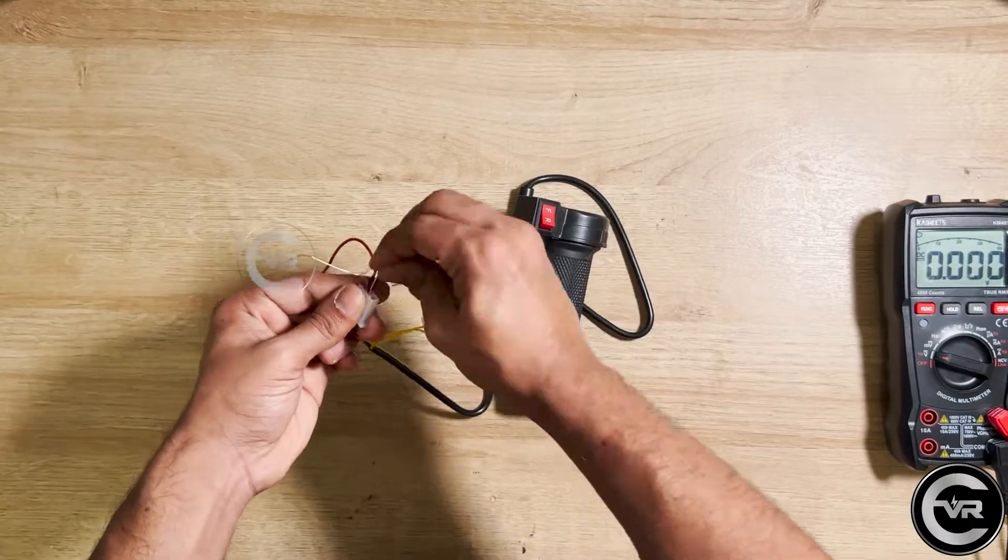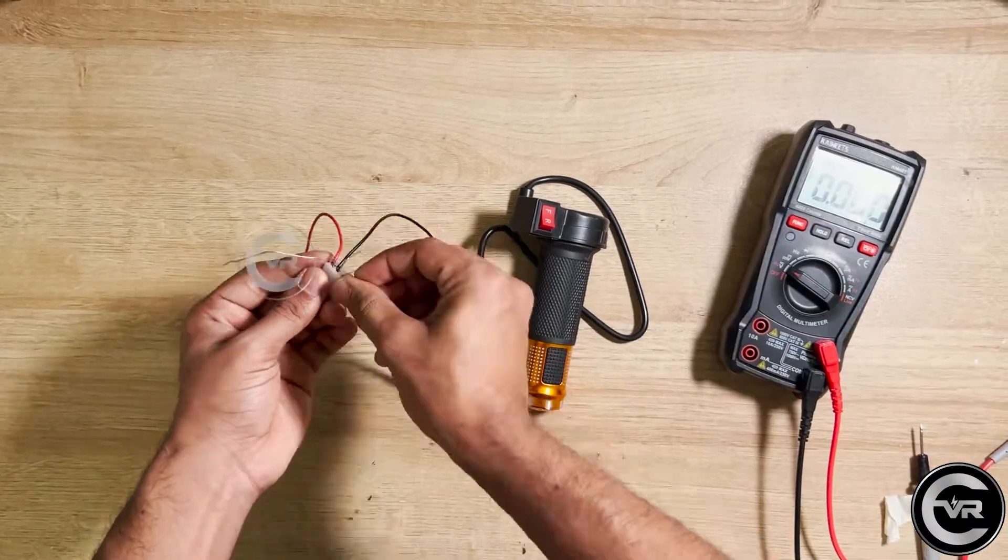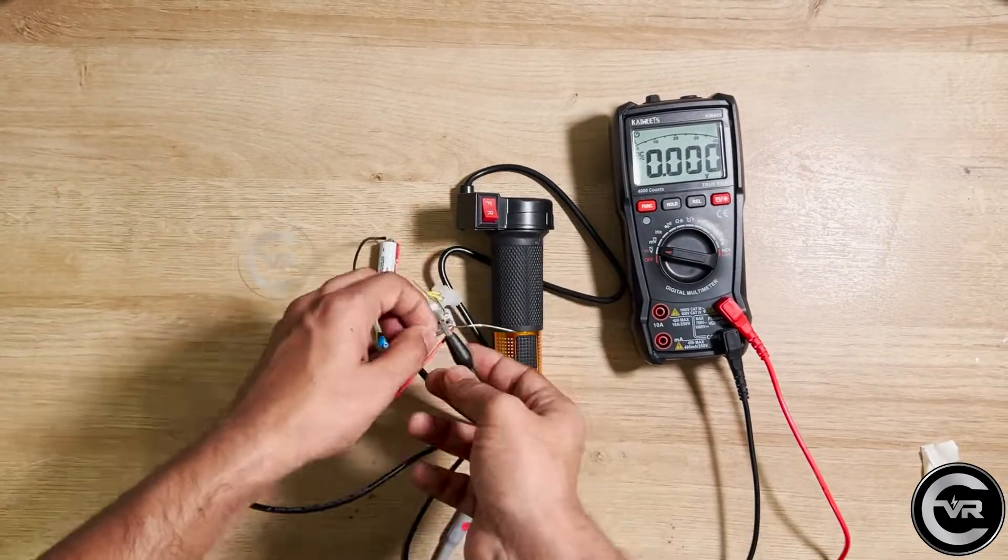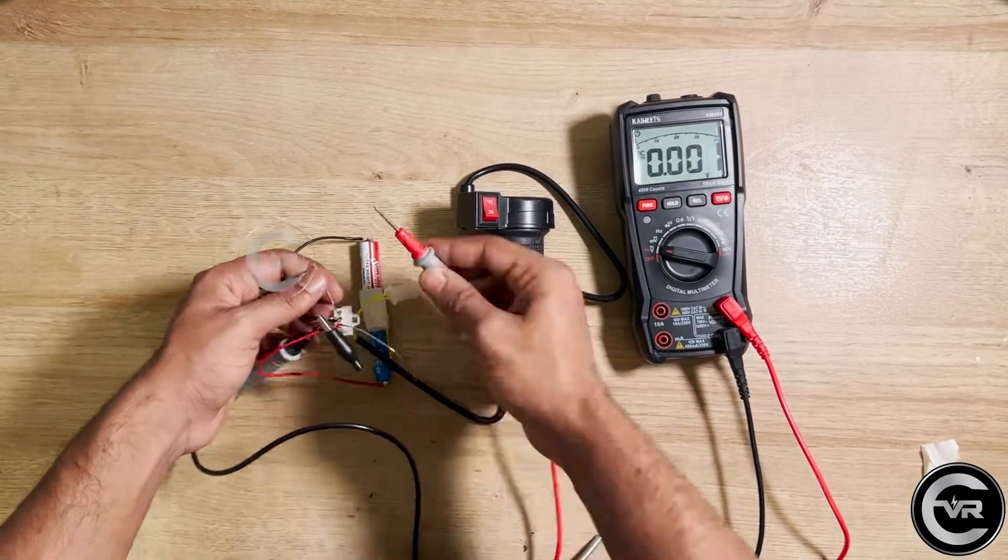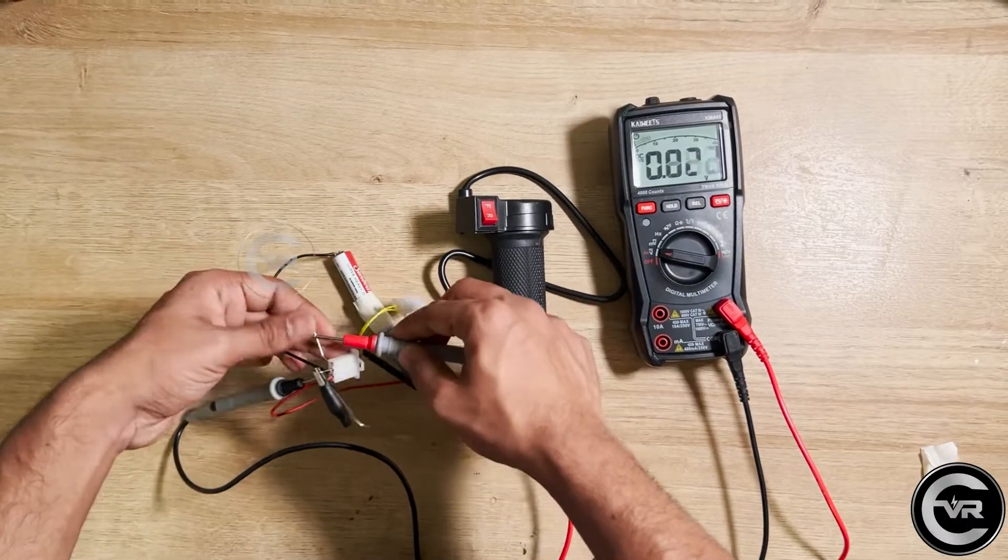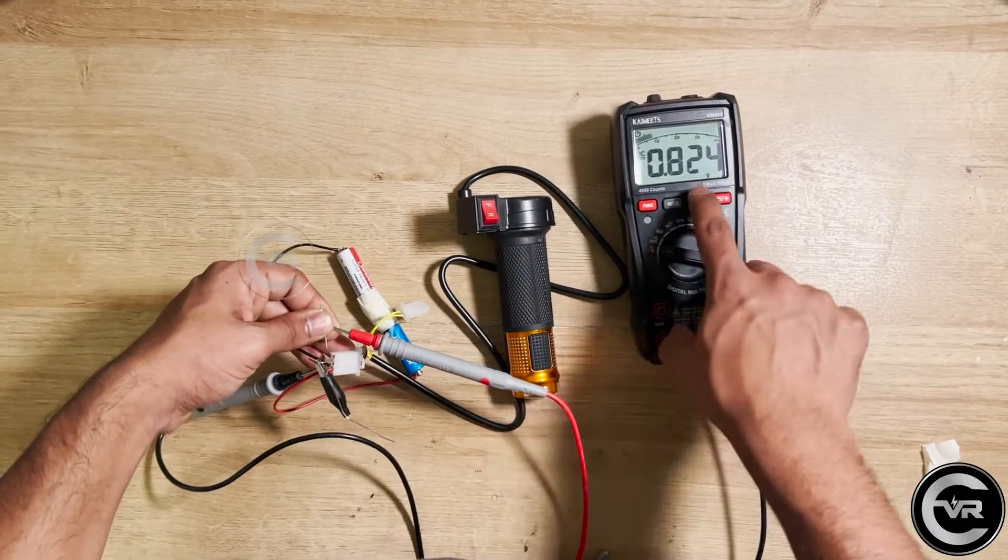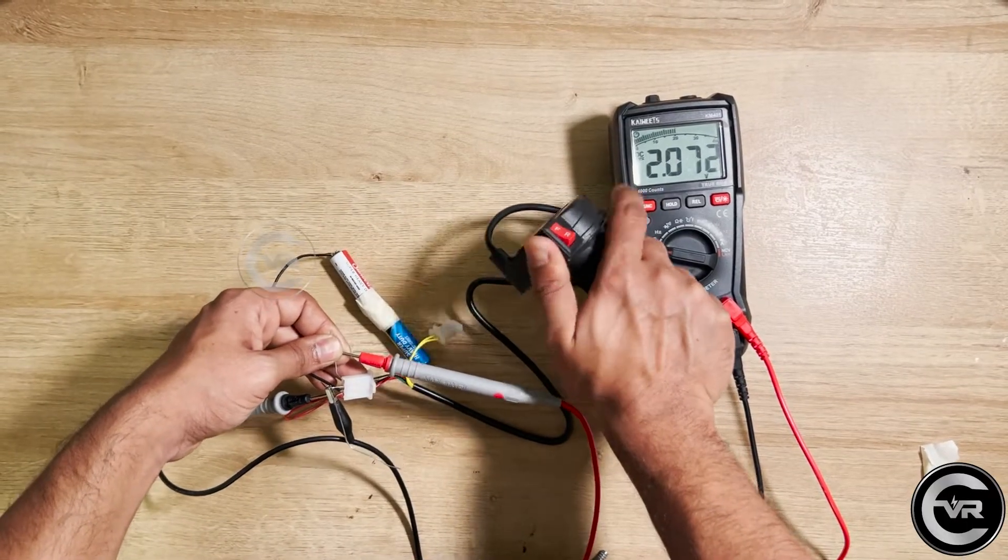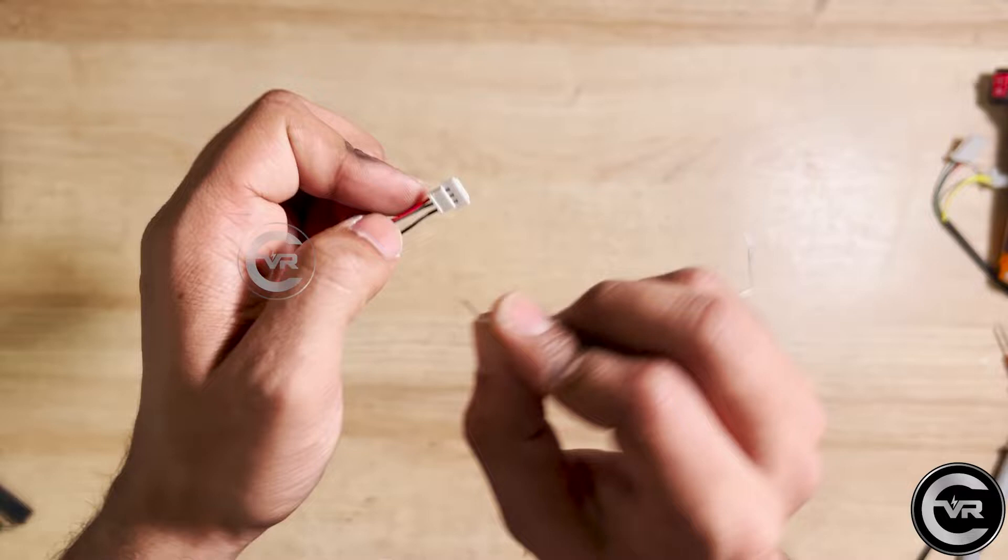Connect negative to the black wire of the throttle. Connect the negative of the multimeter to the green wire and the positive of the multimeter to the positive terminal. When you twist the throttle, the voltage varies—it goes from 0.8 volts to 2.3 volts, which means the hall sensor in the throttle is working. Now let me show you how a bad throttle will perform.